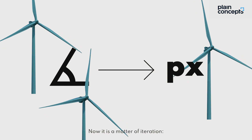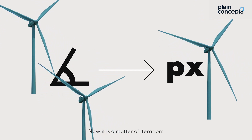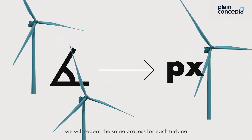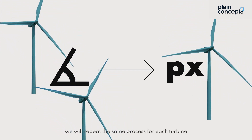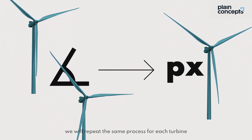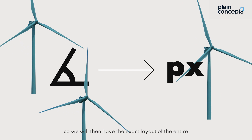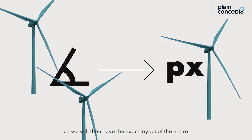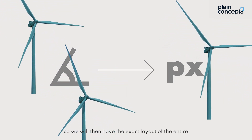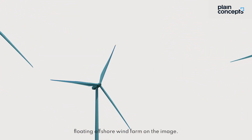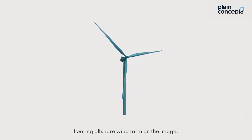Now it is a matter of iteration. We will repeat the same process for each turbine, so we will then have the exact layout of the entire floating offshore wind farm on the image.